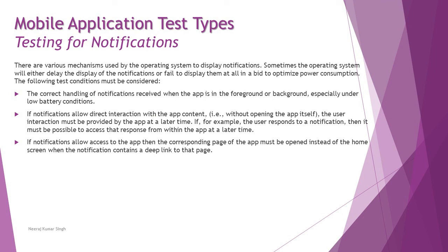In the previous tutorial we understood a lot about interacting with device hardware. Now we will be getting into the device software, which is equally important. The very first thing we are talking about is testing for notifications. Notifications are pretty important when you test a particular app, as they come up in different manners and can cause certain interrupts. There are various mechanisms used by the operating system to display notifications.